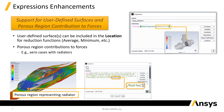There are a couple of new enhancements for expressions. Previously, you could only take, say, the average static temperature on a surface. Now, any object you've created — whether it's a plane, an isosurface, or an isoclip — can be used as the basis for extracting that information. This makes it much easier to go around and extract data.